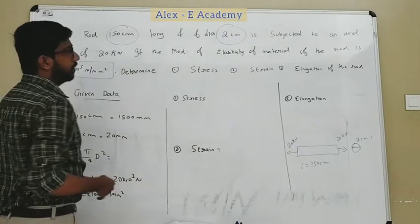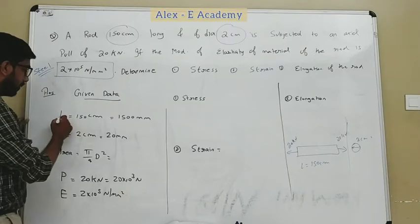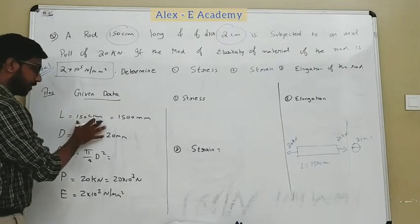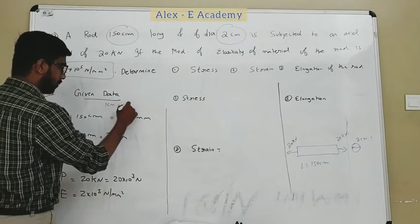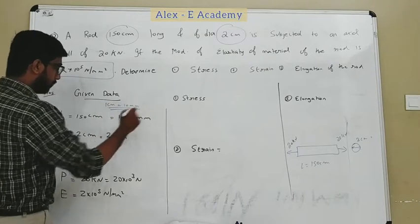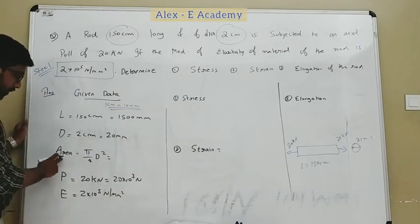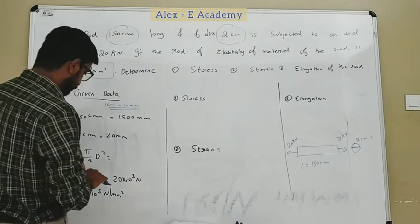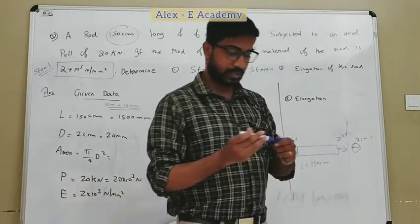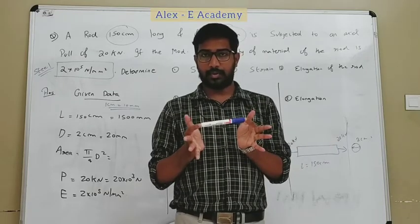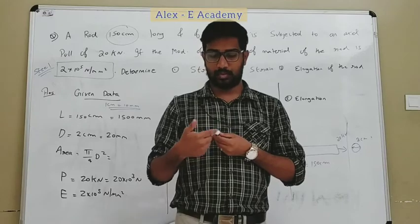The length is equal to 150 cm, which is equal to 1500 mm, since 1 cm is equal to 10 mm. The diameter is equal to 2 cm, which is equal to 20 mm. The cross-section is a circle, so we will use the circular cross-section area formula.